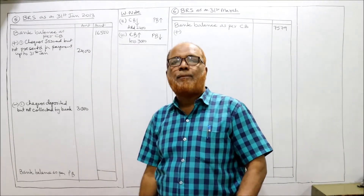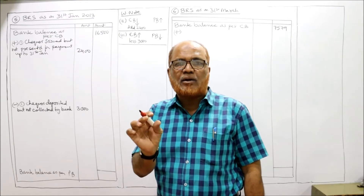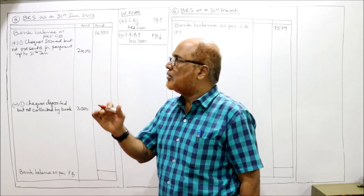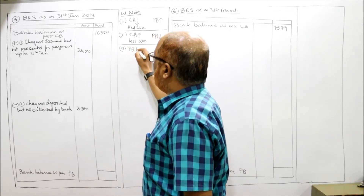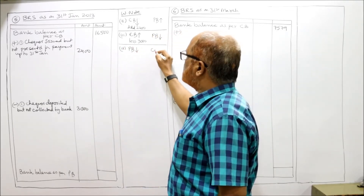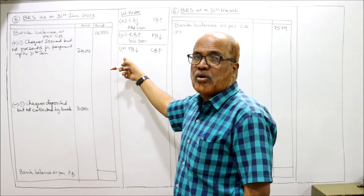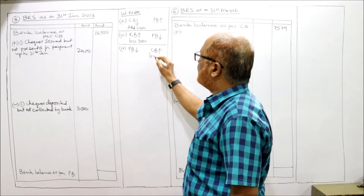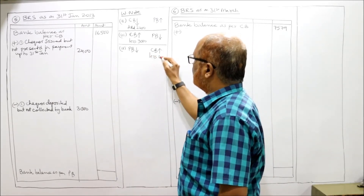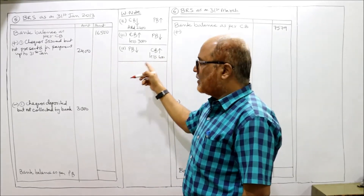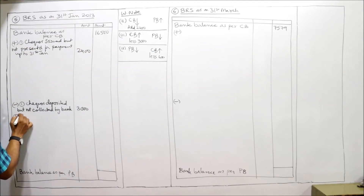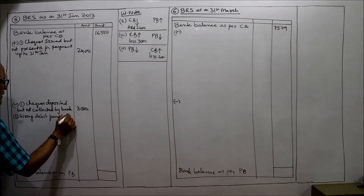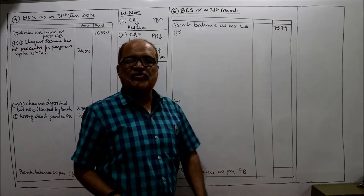Fourth item: a wrong debit of rupees 400 appears in the pass book. When the pass book is debited, the pass book balance comes down. The cash book still shows more balance because the wrong debit is only in the pass book. Our starting point, the cash book, shows more balance, so we have to deduct. Less: wrong debit found in pass book — rupees 400. Fourth item completed.